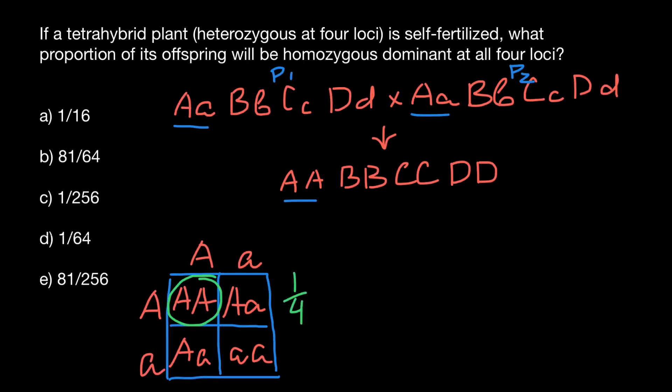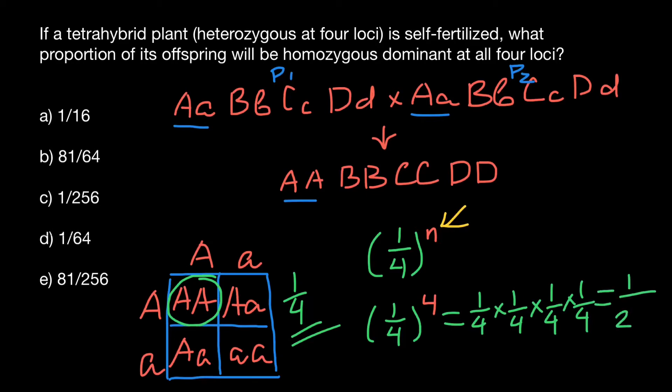We'll use this to solve the problem. The formula is one quarter to the power of N, where N is the number of loci. In our case, it's one quarter to the power of four because we have four heterozygous loci. This is the same as one quarter multiplied by itself four times, which equals one over 256.